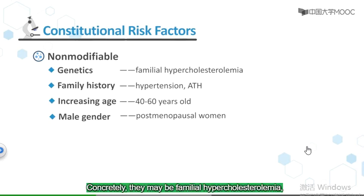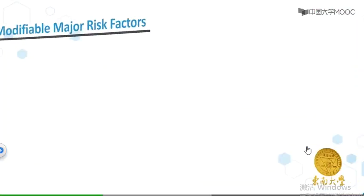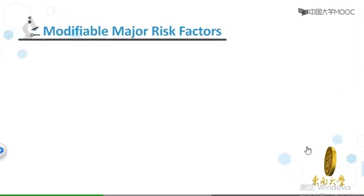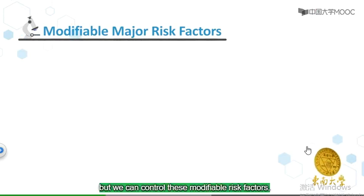Concretely, there may be familial hypercholesterolemia, family members with hypertension and early ATH, age over 40, and women in the postmenopausal period, etc. The factors above are least controllable, but we can control the following multiple risk factors.